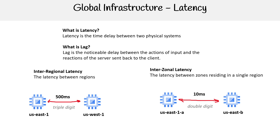The reason this is important is because I saw a question on the exam. It actually asked about 10 milliseconds in the context of high availability. If you knew that inter-zonal latency is in the double digits, you wouldn't choose multi-region — you would only choose a single region with multiple zones. So don't get hung up on the exact number, just understand: triple digit for inter-regional, double digit for inter-zonal.